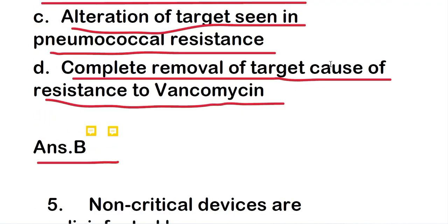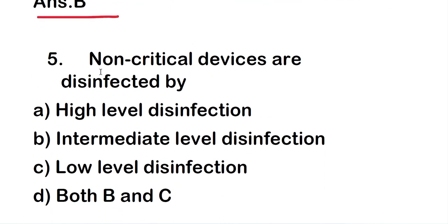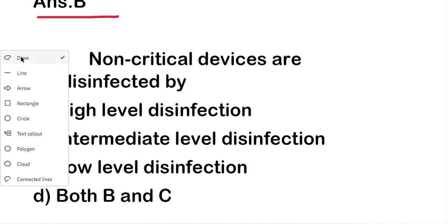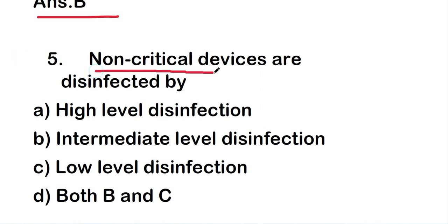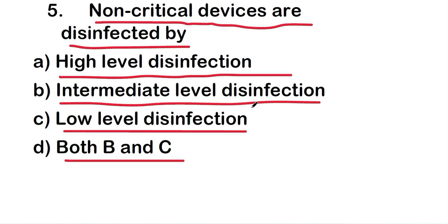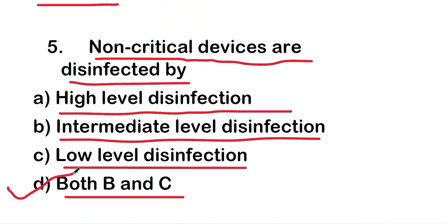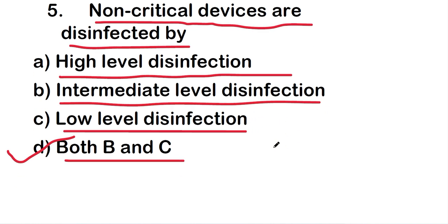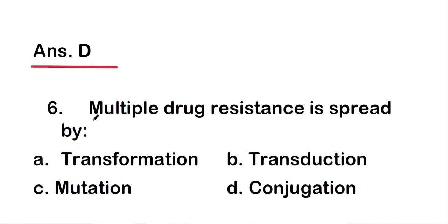The next question: non-critical devices are disinfected by high level disinfection, intermediate level disinfection, low level disinfection, or both B and C. The right answer is option D — both B and C. So non-critical devices are disinfected by intermediate level disinfection and low level disinfection.